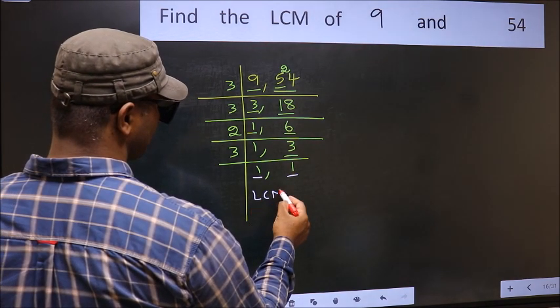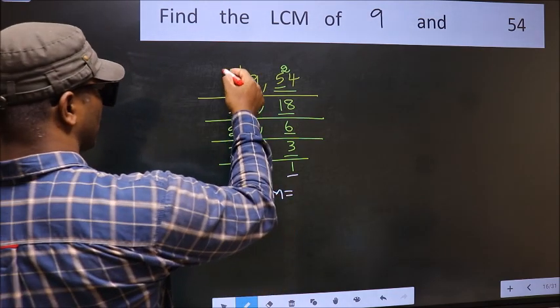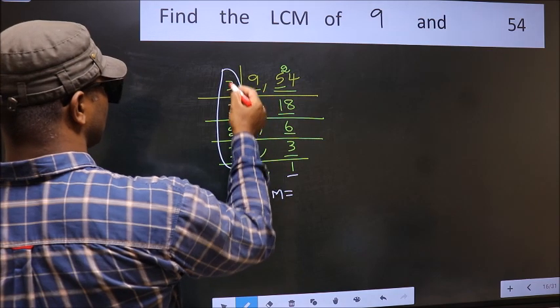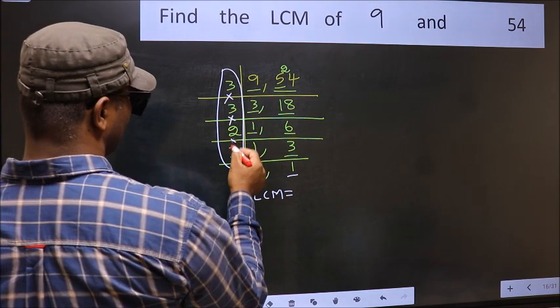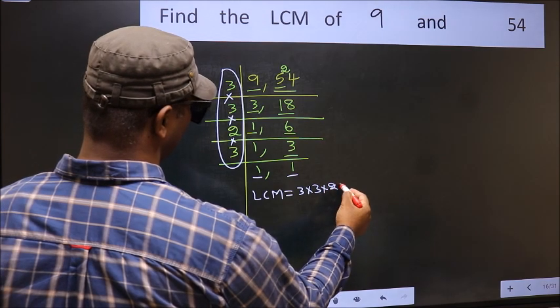So our LCM is, LCM is the product of these numbers. That is 3 into 3 into 3 into 2 into 3.